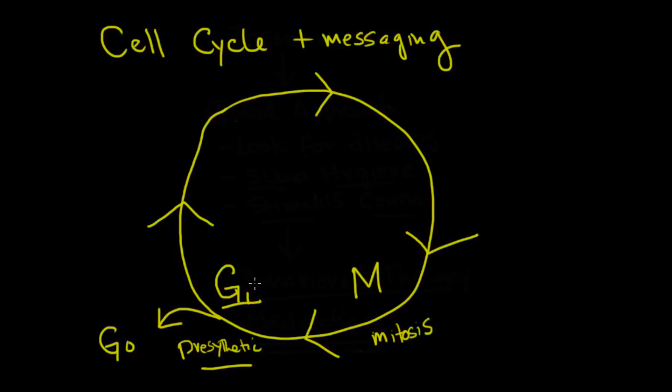Now G1 is where it's preparing to divide, and the first thing that it needs to do before it does divide is it needs to replicate its DNA, and that's called the S phase. S stands for synthetic, and that's where you have chromosome duplication. It's very time-consuming, very energy-consuming.